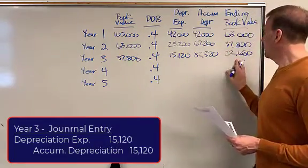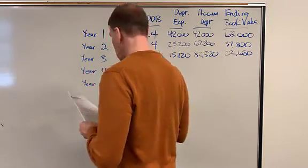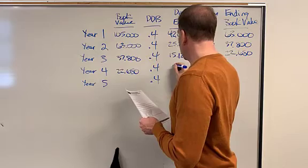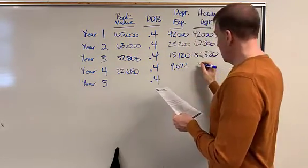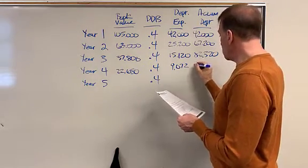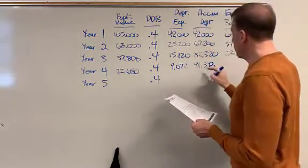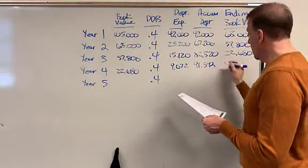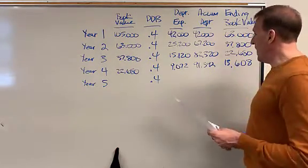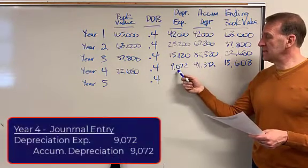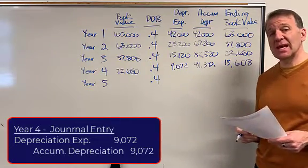Year four, the $22,680 would go over here. 40% is $9,072. Total accumulated depreciation, $91,392. That's adding up all the depreciation expense, gets me my accumulated depreciation. And then my ending value is $13,608. Journal entry would be debit depreciation expense $9,072, credit accumulated depreciation $9,072.